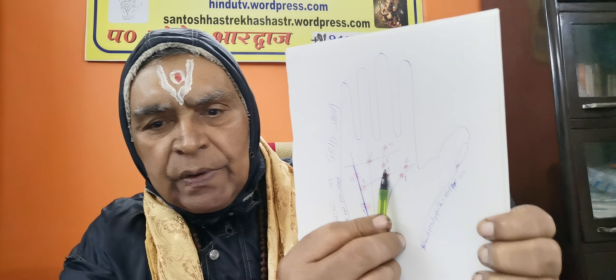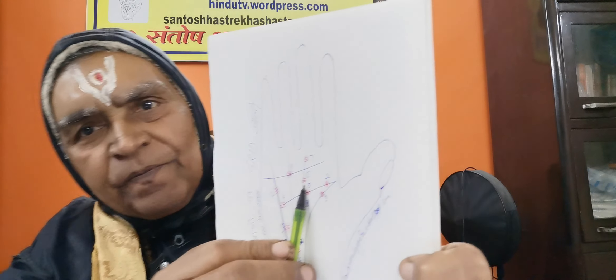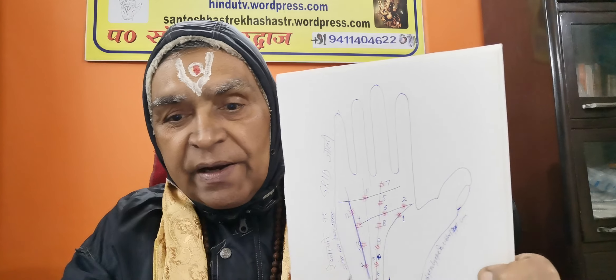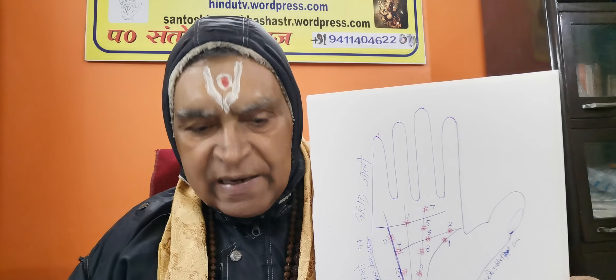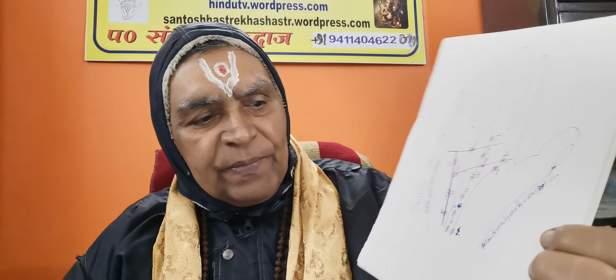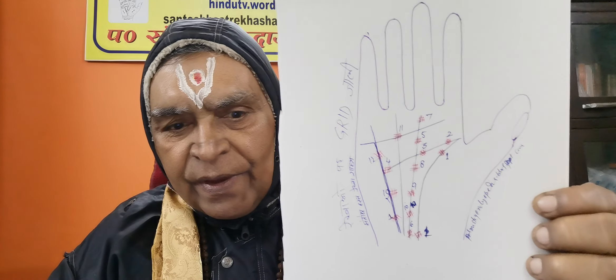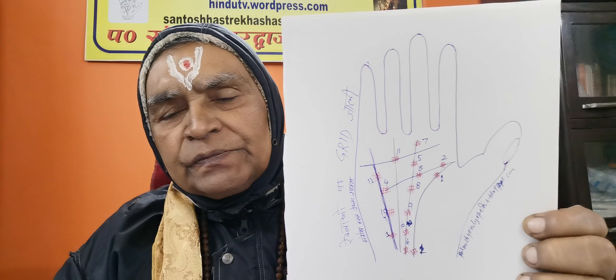A grid found over the heart line touching the luck line indicates financial trouble and inability to lead a systematic life. If the grid is found in the beginning of the luck line, it shows hardship when the child is eight to ten years old.